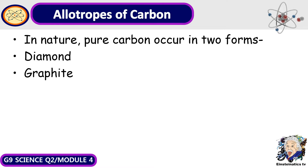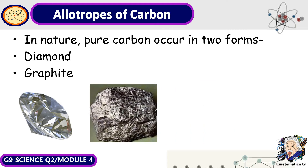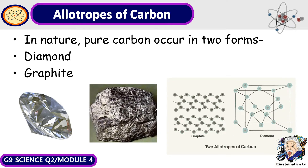Allotropes of Carbon. In nature, pure carbon occurs in two forms: the first one forms into a diamond and the other one forms into graphite. Here's a quick look at the structure of the allotropes of carbon — graphite and diamond.